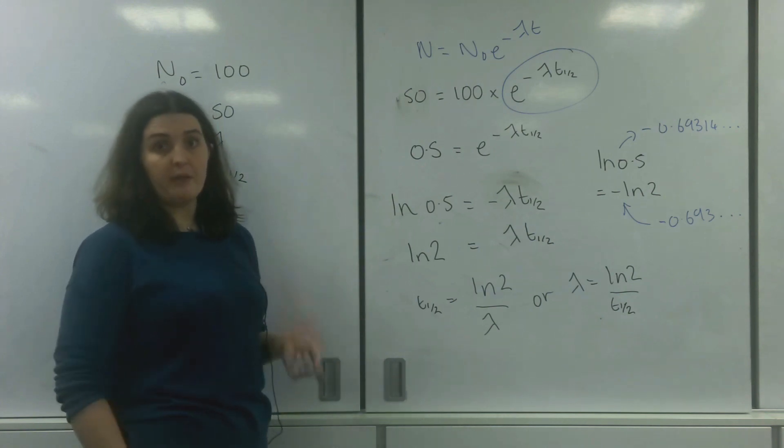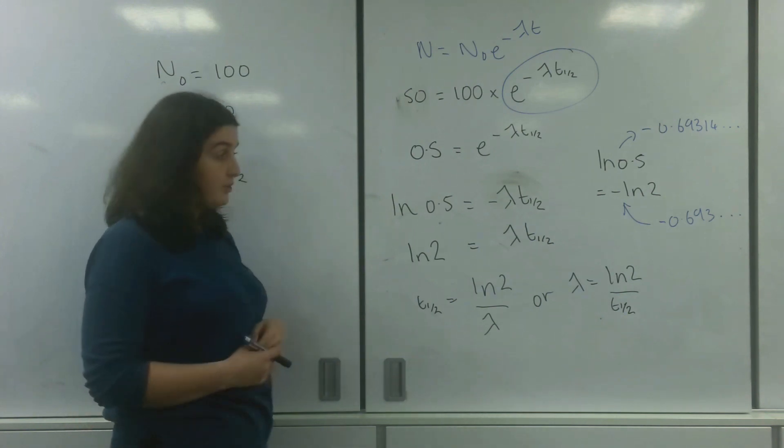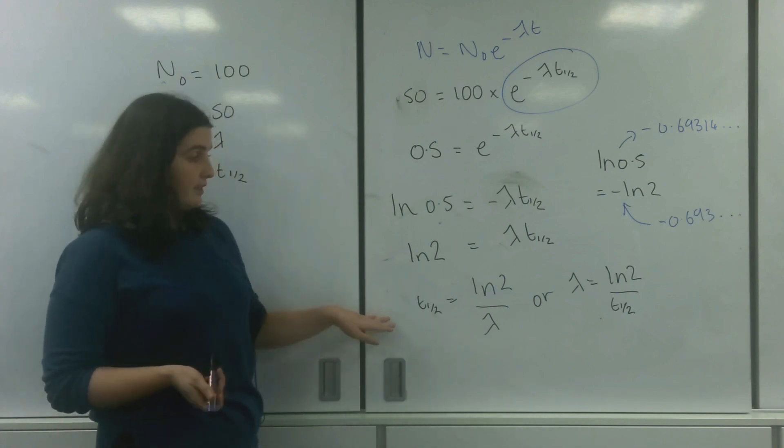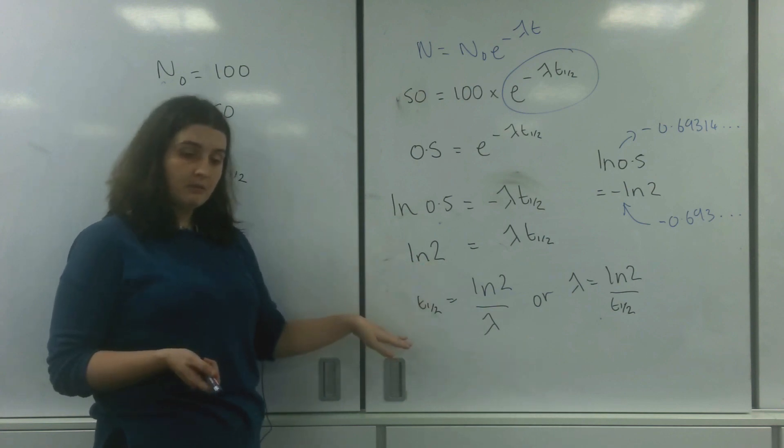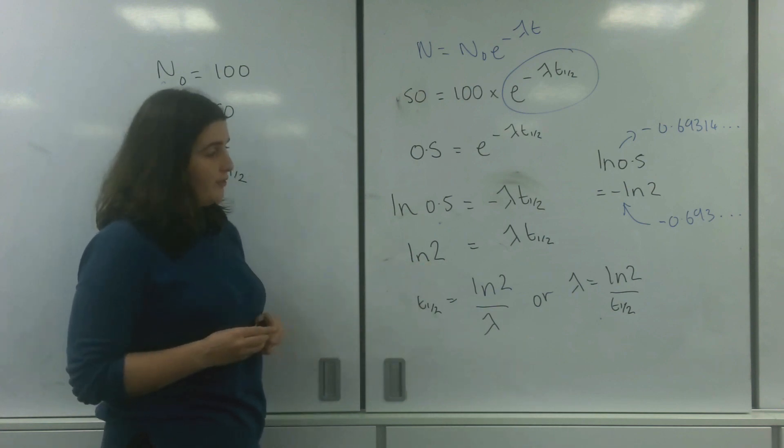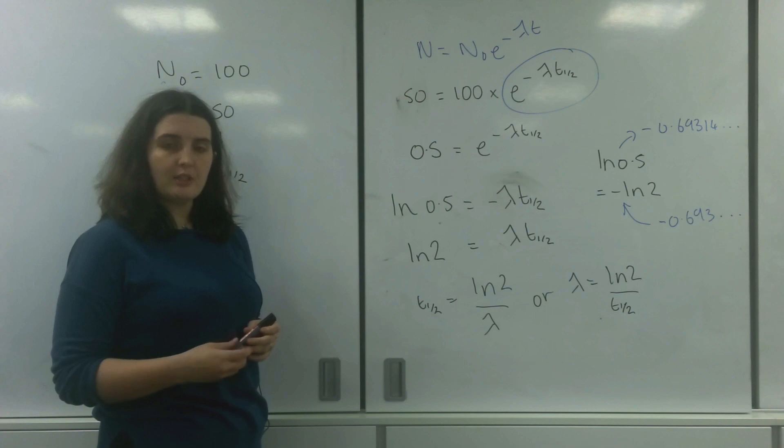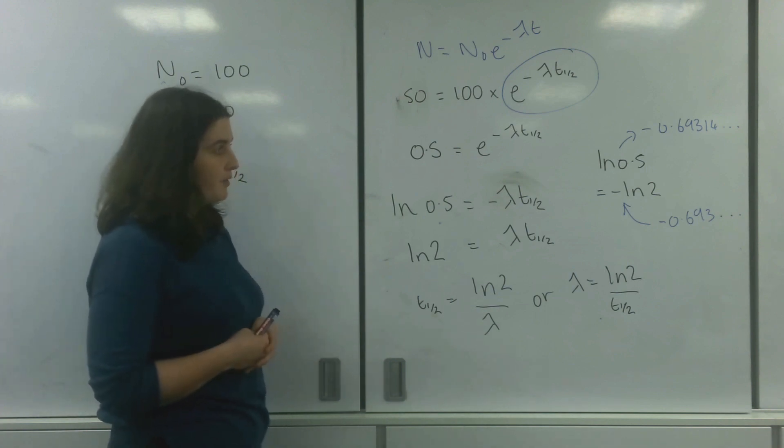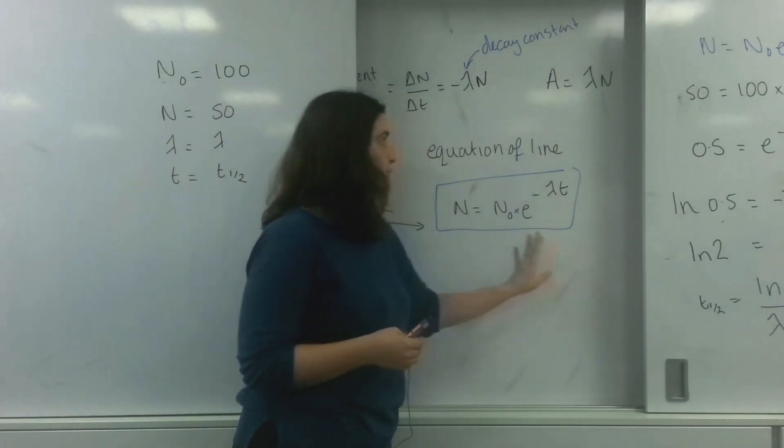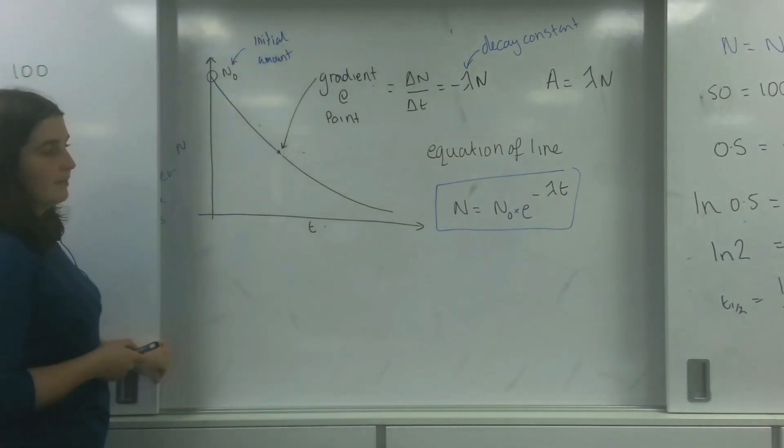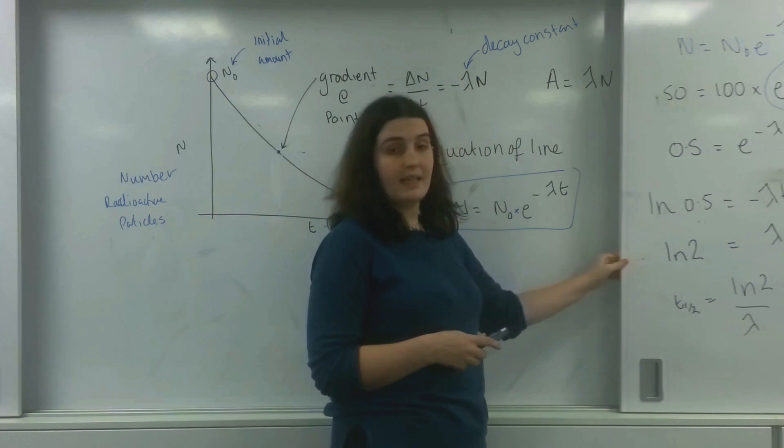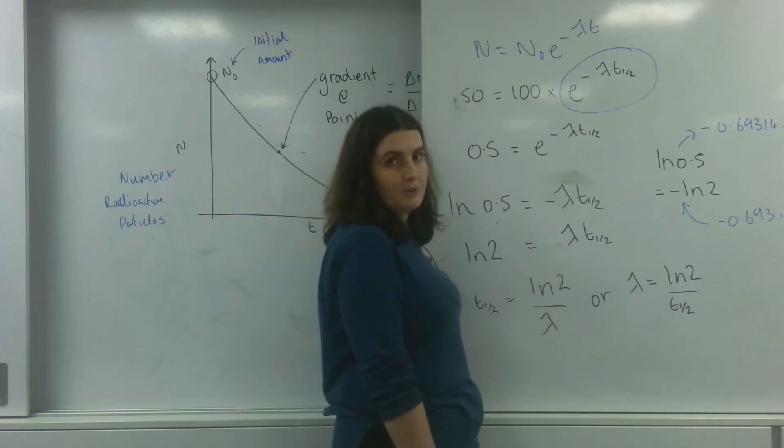And from the information from half-life, which you might be able to get from your graph, or from the decay constant, you might be able to work out its half-life. This formula is invaluable for using other information that you might collect along the way or be given about a radioactive source. So that is how you're able to use this formula here to find the half-life or the decay constant of the material.